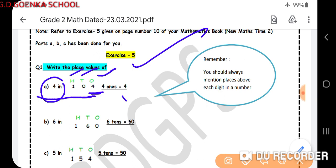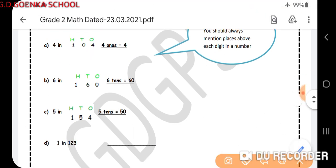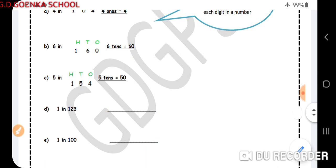Now let us do the second part: 6 in 160. So first step is to write ones, tens, hundreds. By writing this, I came to know that 6 stands at tens place, that is equal to six tens, or we can say 60.